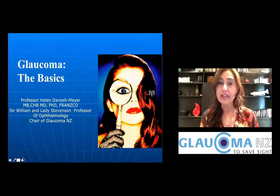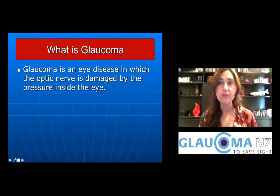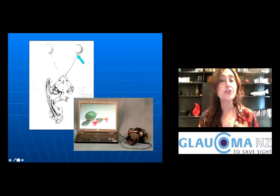The topic I'd like to start with is glaucoma — the basics. In the next 10 minutes I'd like to cover 10 basic facts about glaucoma that everyone needs to know. The first is: what is glaucoma? Glaucoma is an eye disease in which the optic nerve is damaged by the pressure inside the eye. So what is the optic nerve? The optic nerve is the nerve of sight.